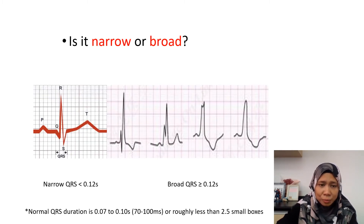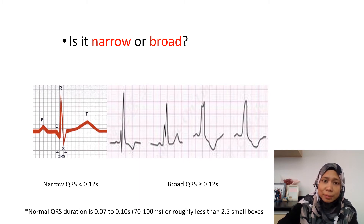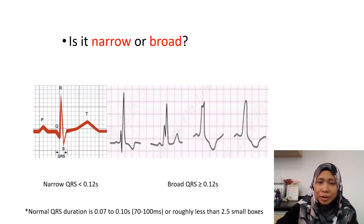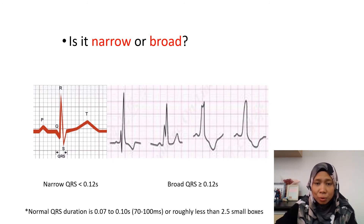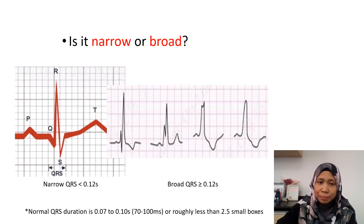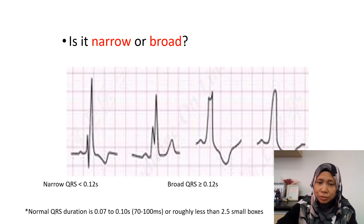Now we look at the QRS complex — is it narrow or broad? On the left hand side you can see a narrow QRS complex. The normal duration of QRS is about 70 to 100 milliseconds, which is less than 2.5 small boxes. If it is more than 2.5 small boxes, it is considered a broad QRS complex, like the diagram on the right hand side.